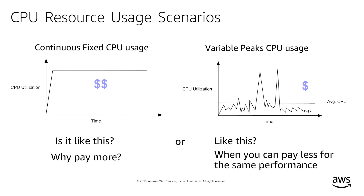Most general purpose instances don't need fixed CPU resources and use applications that occasionally need quick access to high CPU utilization. With T3 instances, if your application is idle sometimes or only needs a moderate amount of CPU power for a majority of the time, you can use T3 instances and burst CPU whenever and for as long as needed. This enables significant cost savings as you do not pay for the full CPU resource.